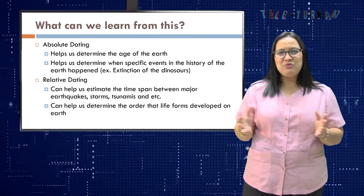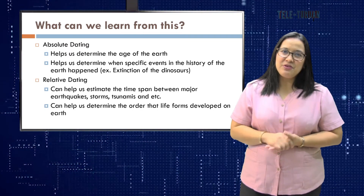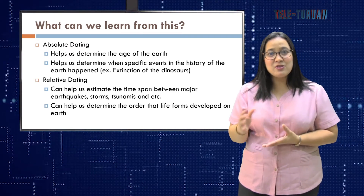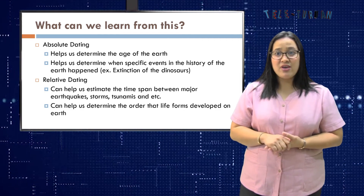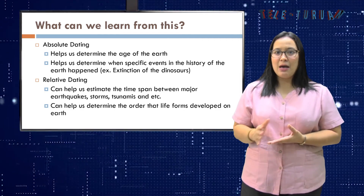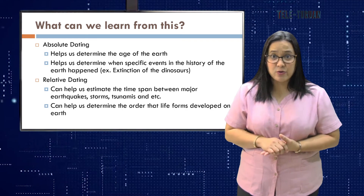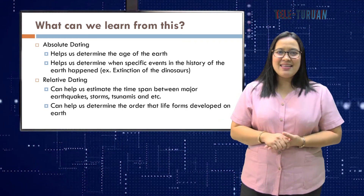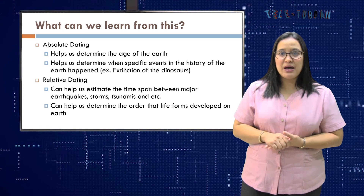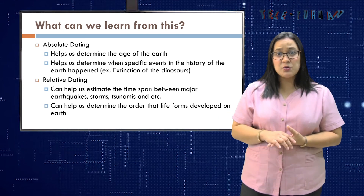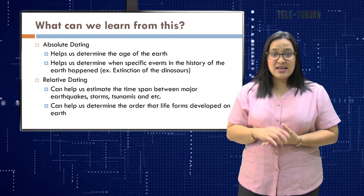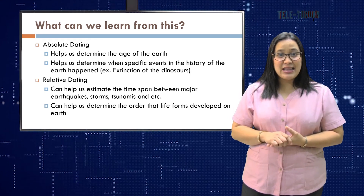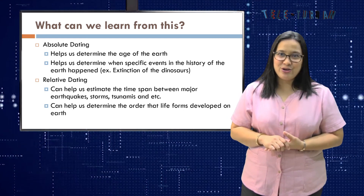So what can we learn from this? Absolute dating helps us determine the age of the Earth. It also helps us determine when specific events in the history of the Earth happened, such as the extinction of the dinosaurs. Relative dating can help us estimate the time span between major earthquakes, tsunamis, storms, etc. It can also help us determine the order that life forms developed on Earth.